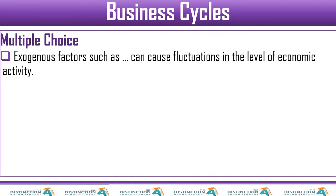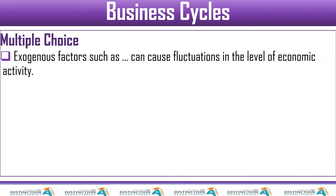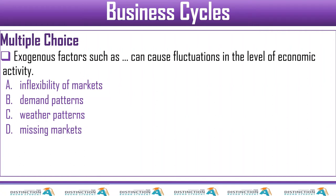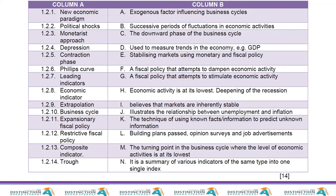Question twelve: exogenous factors such as — these are factors originating from outside. Looking at the options for something coming from outside, weather patterns is the obvious one.